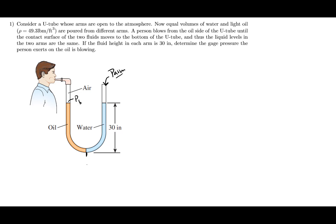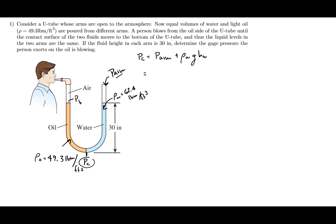First, let's solve for PC. We know the atmospheric pressure, so: PC = P_atm + ρ_water × g × H_water. I'm working in English units since the oil density was given in those units. The oil density is 49.3 lbm/ft³, water density is 62.4 lbm/ft³, and atmospheric pressure is 14.7 psi.